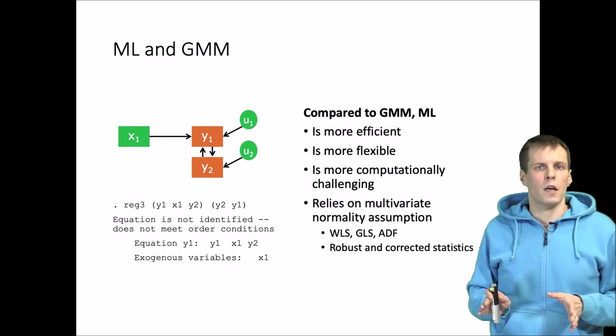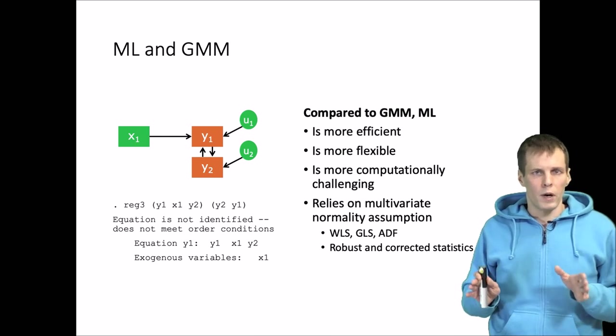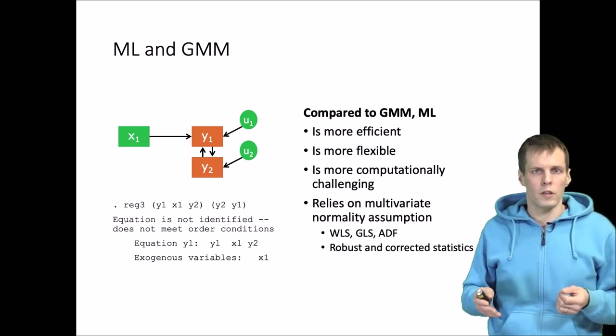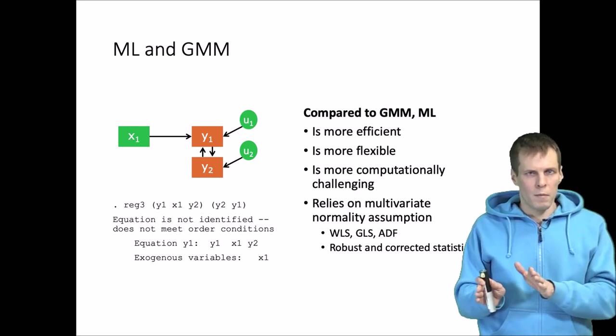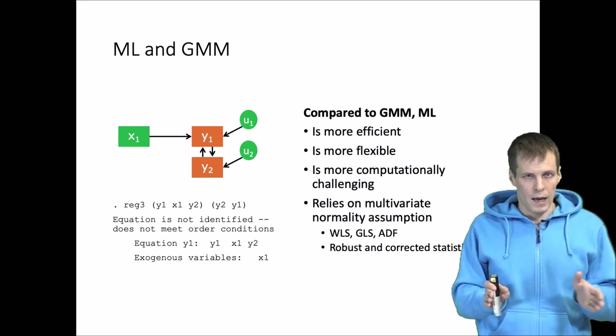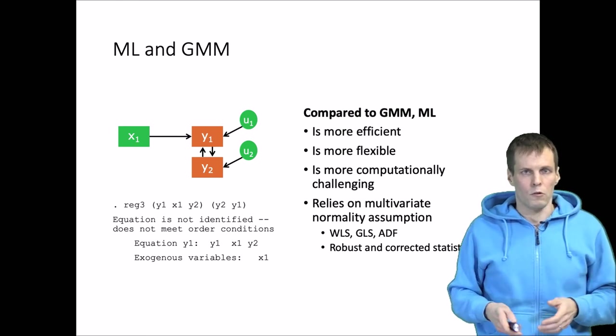I will not go into detail on the normality assumption, but it is useful to understand at this point that when we decide between GMM and ML, then ML adds an assumption that GMM does not make.